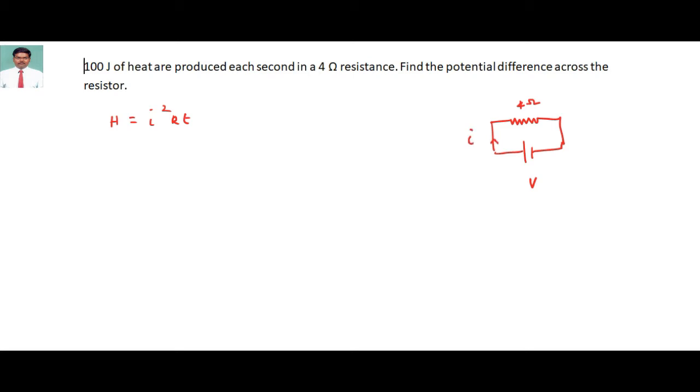The energy that is produced will be equal to 100 joules. In this problem they are asking for the potential difference across the resistor, what is the potential difference I have to find.